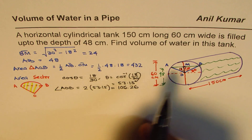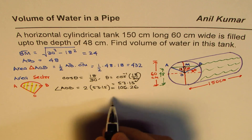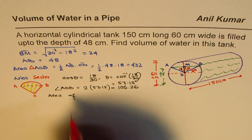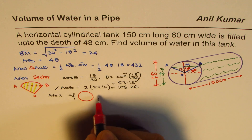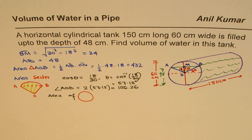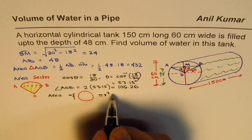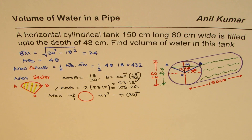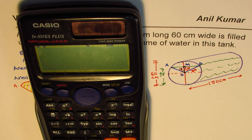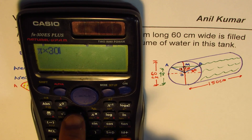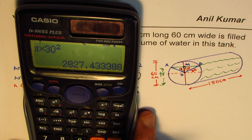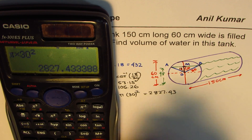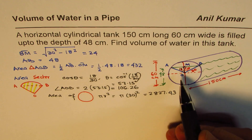To find the area of the sector, we first find the area of the full circle. Area of circle equals π r², and in our case r is 30 cm, so it is π times 30², which equals 900π, or in decimals, 2827.43 cm².